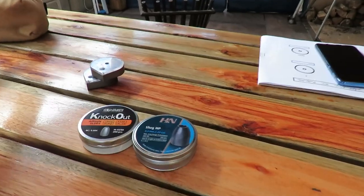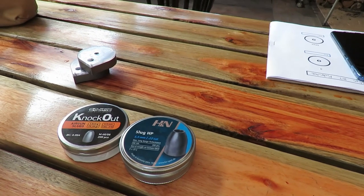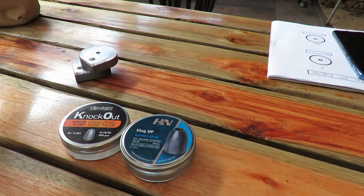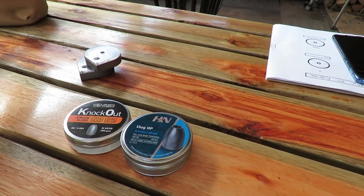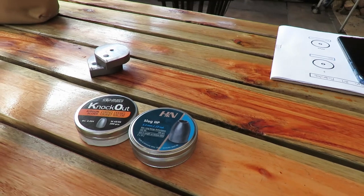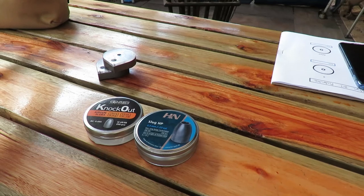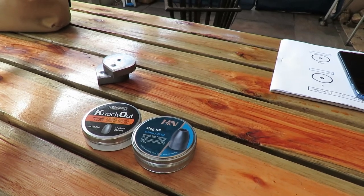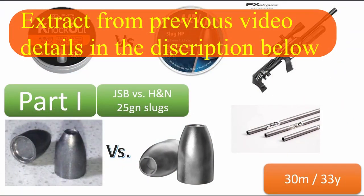Today I'm going to focus primarily on the JSB knockouts and H&N 25 grainers, specifically with the pin probe that I've inserted. This is a two-in-one video. First and foremost, I want to see what is the effect of the pin probe in the gun. Does it increase the speed, yes or no, and by how much? And then secondly, which of these two is going to give me the best results at 30 meters.